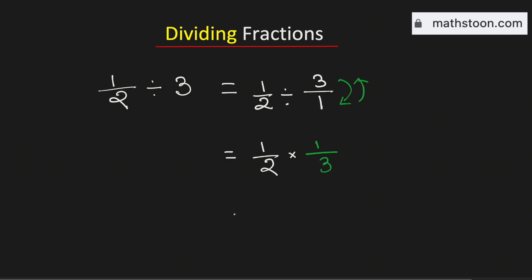Now if we multiply the numerators we will get 1 times 1 which is 1, and in the denominator we have 2 times 3 which is 6. Therefore 1 by 2 divided by 3 is equal to 1 over 6, and this is our final answer.